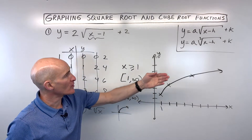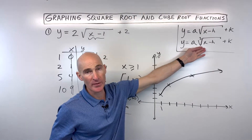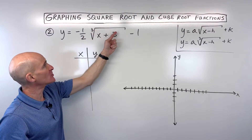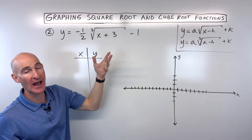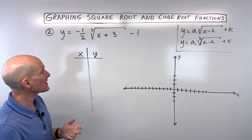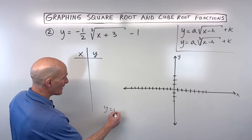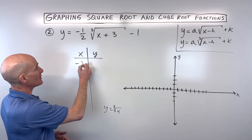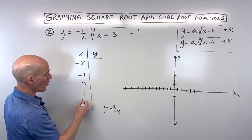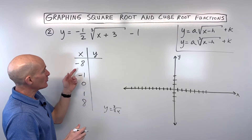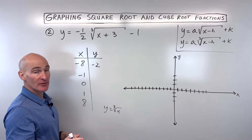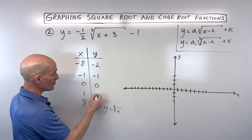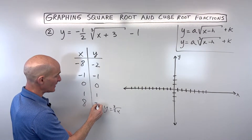Let's take a look at a cube root graph now. For example 2, we've got y equals negative one-half times the cube root of x plus 3 minus 1. First, look at the parent function y equals cube root of x, and pick numbers that are easy to take the cube root of: negative 8, negative 1, 0, 1, and 8. The cube root of negative 8 is negative 2, cube root of negative 1 is negative 1, cube root of 0 is 0, cube root of 1 is 1, and cube root of 8 is 2.